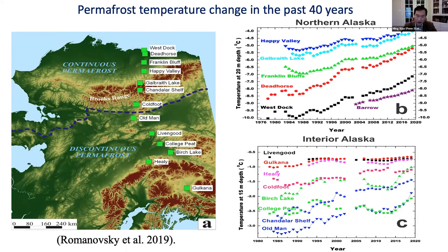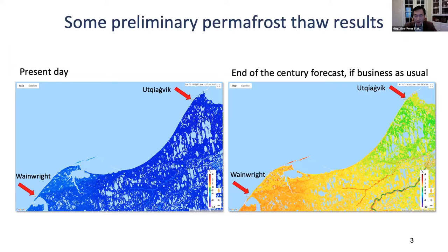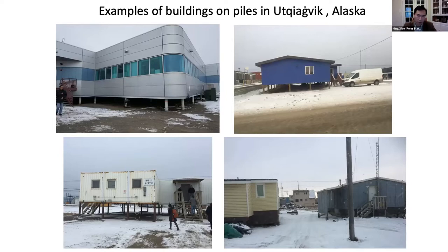Climate change has a significant impact on ground temperature. My colleagues at UAF have a permafrost model looking at two coastal communities: Utqiaġvik and Wainwright. At present day, the temperature is about negative 8 degrees and the ground still stays frozen. But if we do nothing about climate change — business as usual — by end of century, the permafrost in Wainwright would have thawed, and in Utqiaġvik the ground would be close to thawing. There are lots of issues related to permafrost thawing.